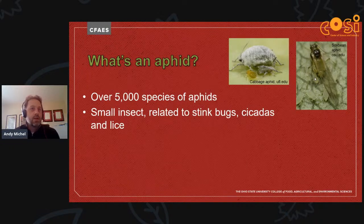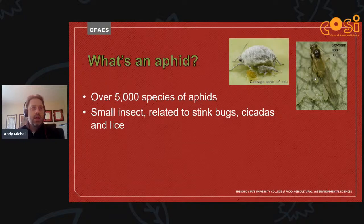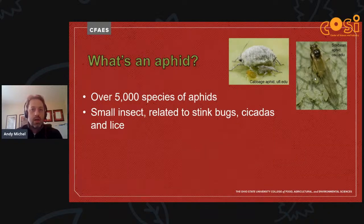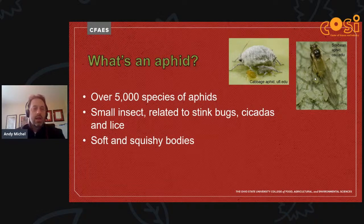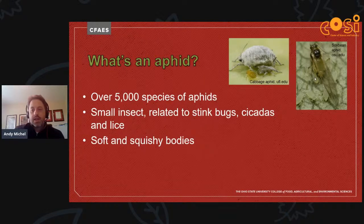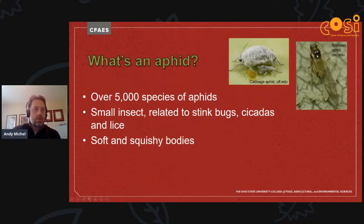Aphids are typically very, very small. Some of you have probably seen them. They are related to stink bugs, cicadas, and lice — they are a very old, ancestral type of insect. They have soft and squishy bodies; they're not like a beetle with a hard shell. The only times they are somewhat hard is when they have wings, and even then, most of the hard parts are not really all that hard.